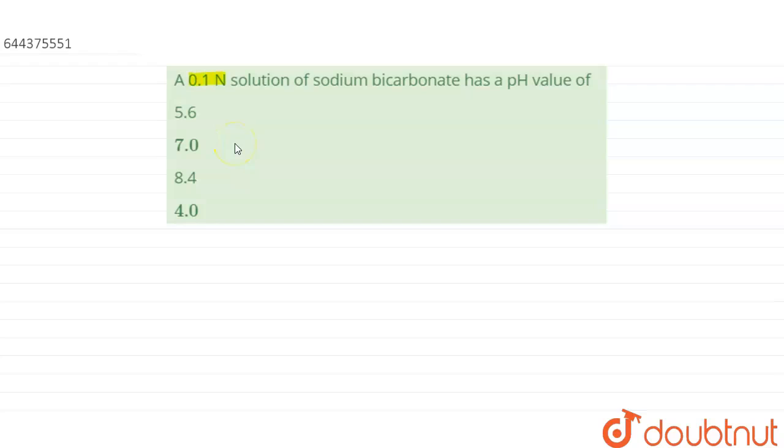A 0.1 normal solution of sodium bicarbonate has a pH value of... So we have been asked the pH value of sodium bicarbonate. We know that sodium bicarbonate is NaHCO3, and we know that it is basic in nature.